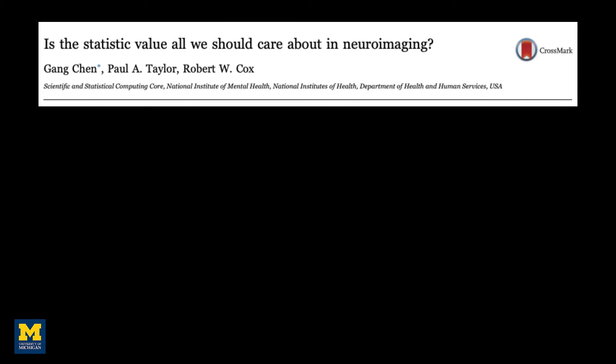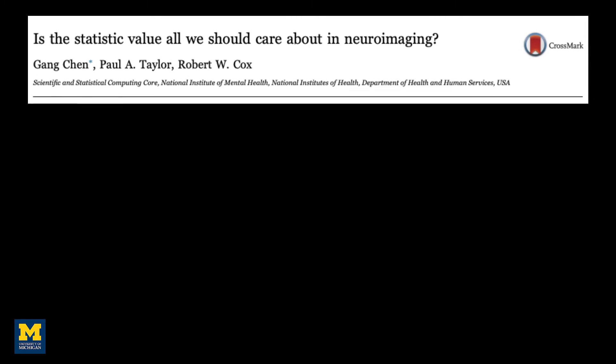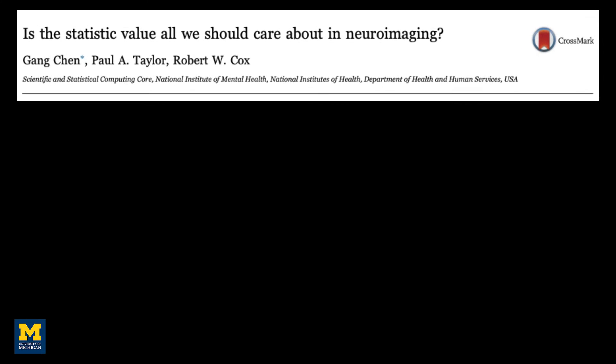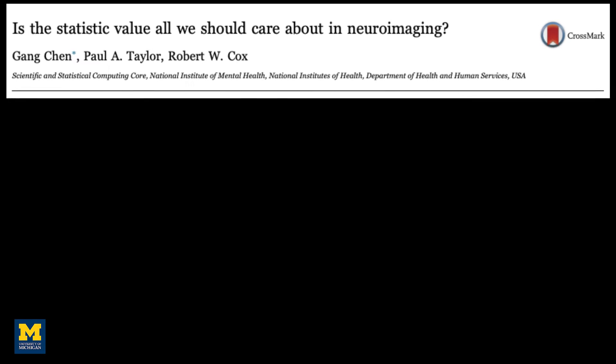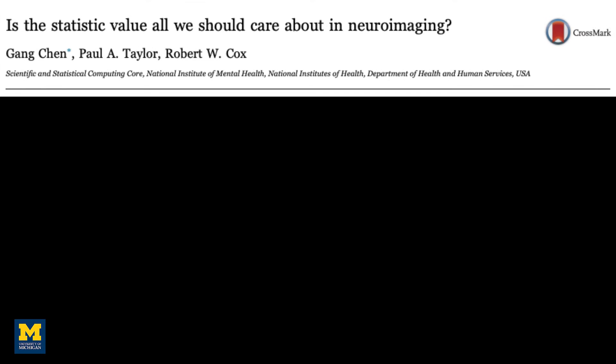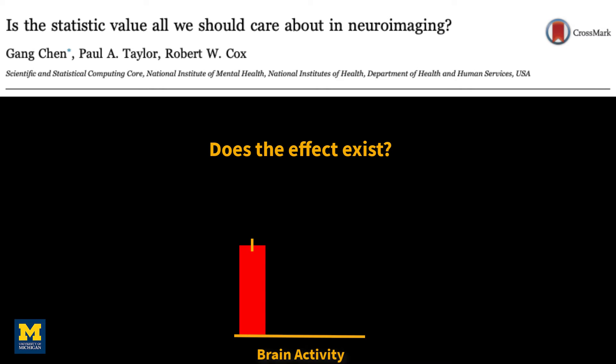We should ask ourselves the same questions about the effects we observe in the neuroimaging literature, as was raised in a paper by Gang Chen and colleagues in 2017. Usually, the t-statistic allows us to determine whether an effect exists or whether what we're seeing is just due to noise.